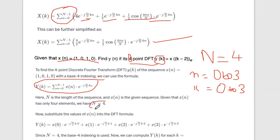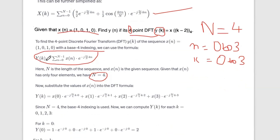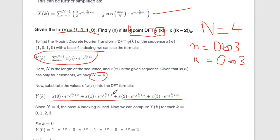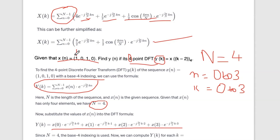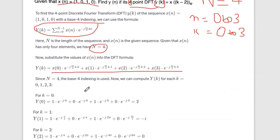We will add x of k for values 0 to 3. The summation will be added term by term: n equals 0 gives X(0) e raised to minus j 2π by 4 times k times 0, plus X(1) e raised to minus j 2π by 4 times k times 1, and so on. The terms involve x of 0, x of 1, x of 2, x of 3.